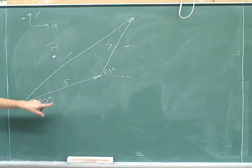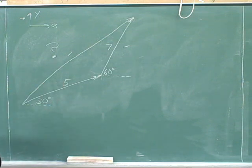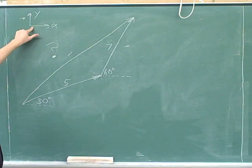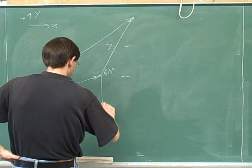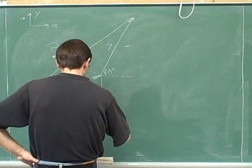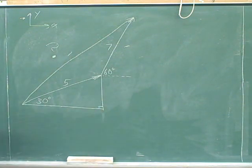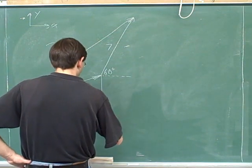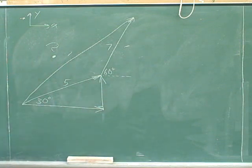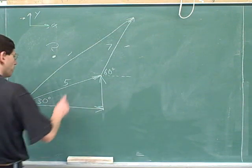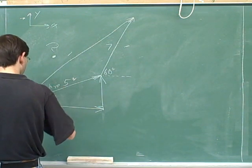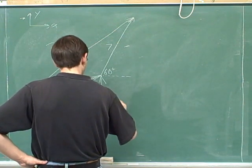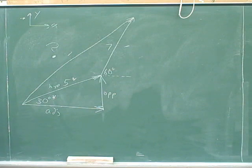Now I need to draw a right triangle that uses the vector of length 5 as the hypotenuse, with legs parallel to the axes — one horizontal leg and one vertical leg. Here we have that right triangle. The x-component points to the right and the y-component points upward. We need to figure out how long each of these components are using the given angle of 30 degrees, finding the opposite and adjacent sides of this triangle.